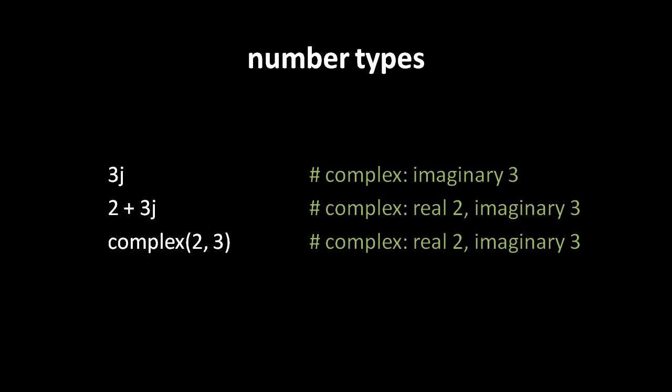In addition to ints and floats, there's a third number type for complex numbers called 'complex'. The way to express a complex number as a literal is to write the imaginary portion suffixed with a 'j' — the letter 'j' rather than 'i' because 'i' in many programming fonts looks too much like 'l' or '1'. To write a complex number with a real portion, add a regular integer to the imaginary number. Alternatively, use the complex() constructor with the real portion as the first argument and the imaginary portion as the second.